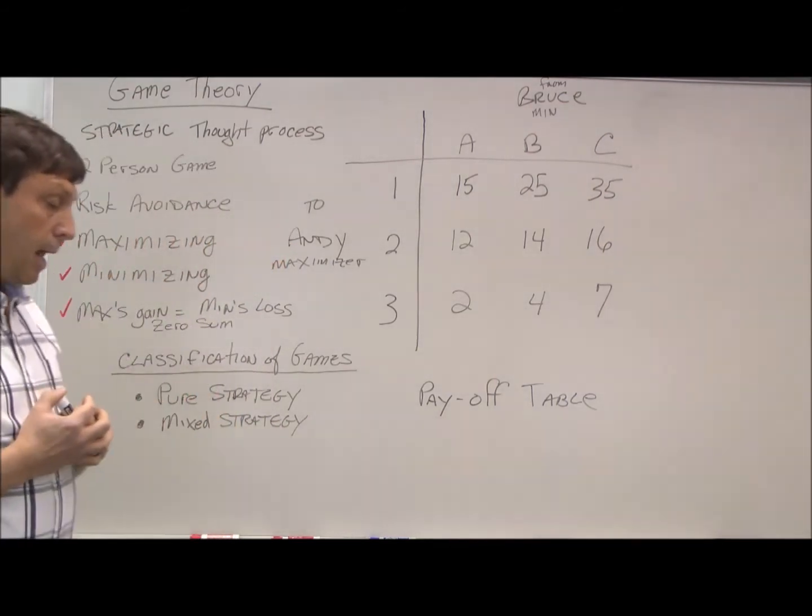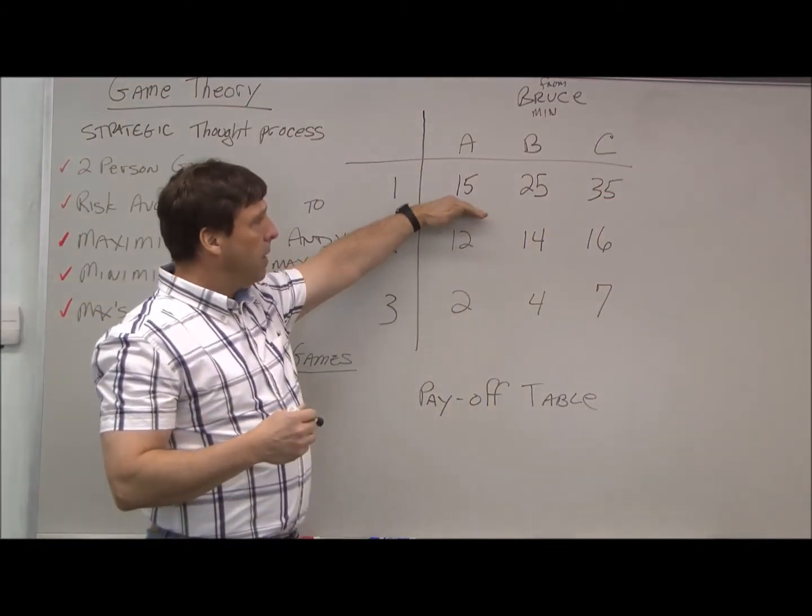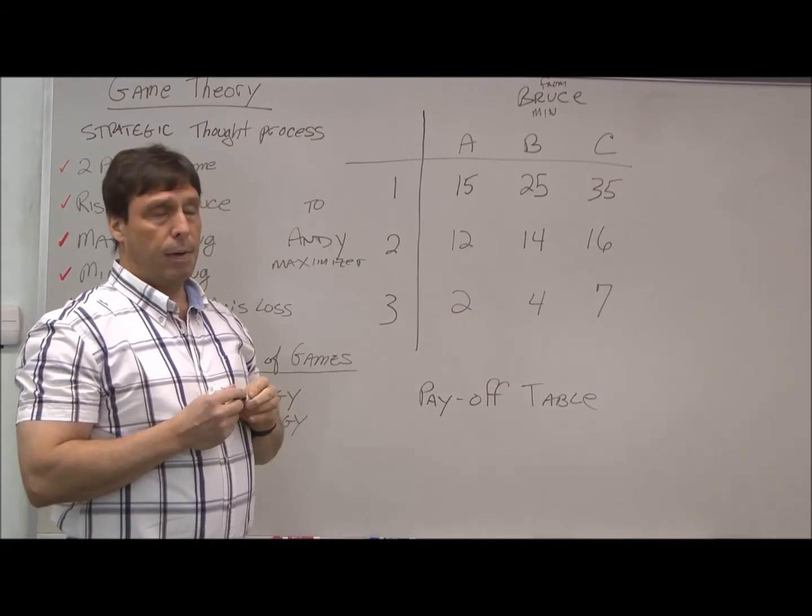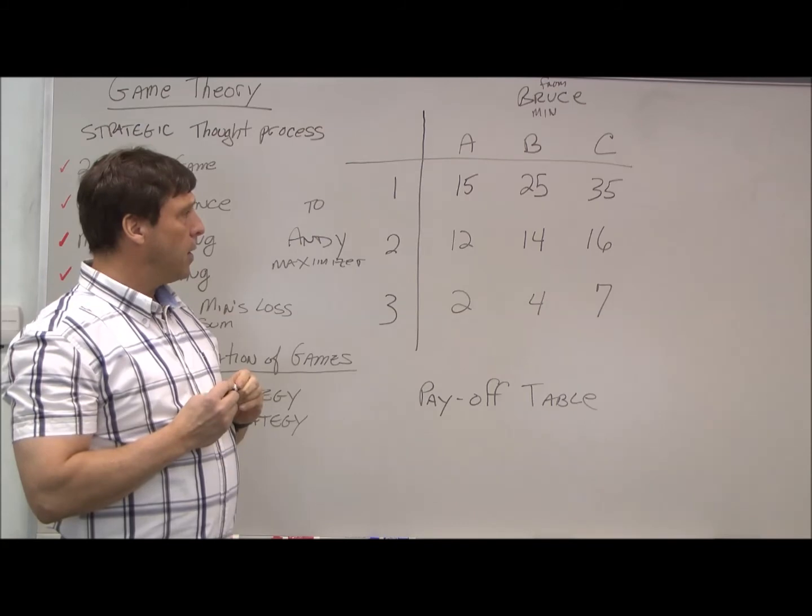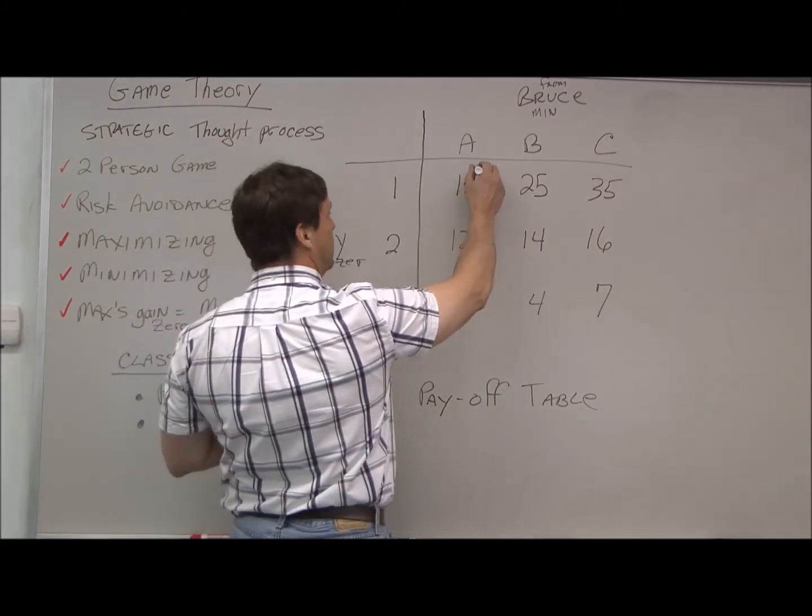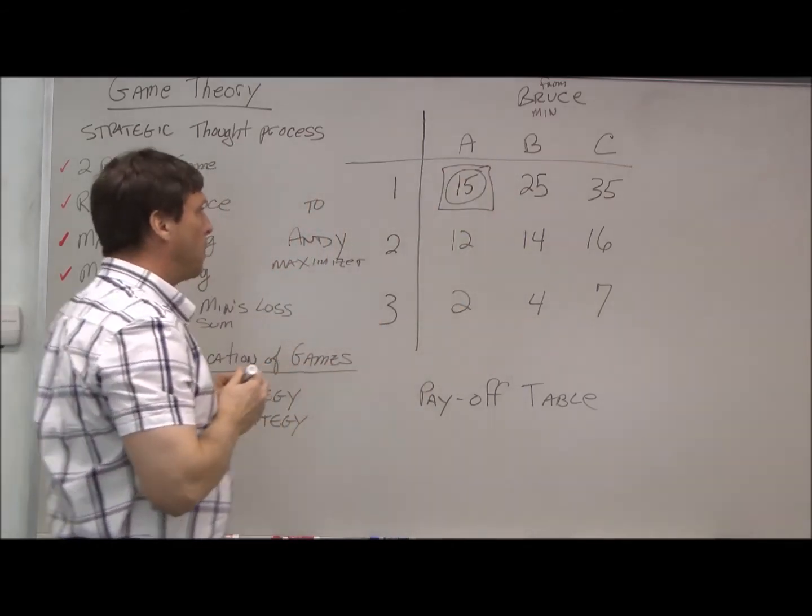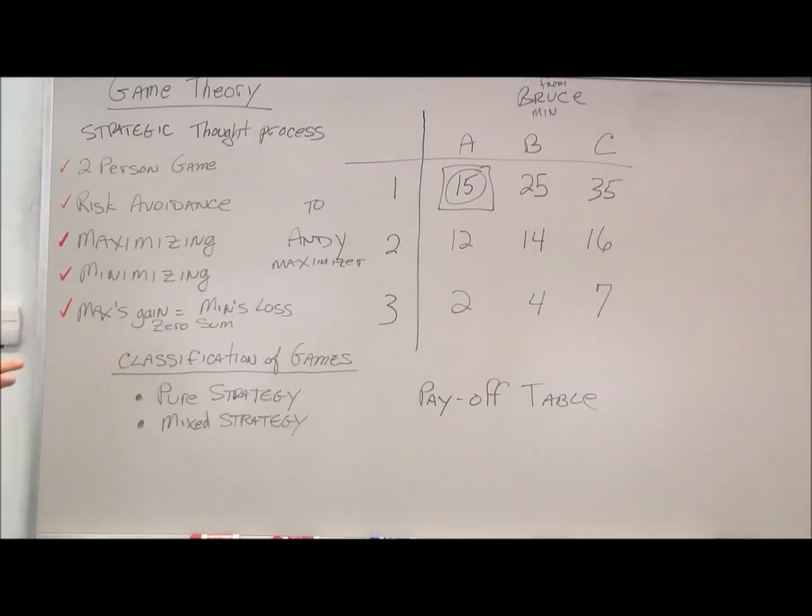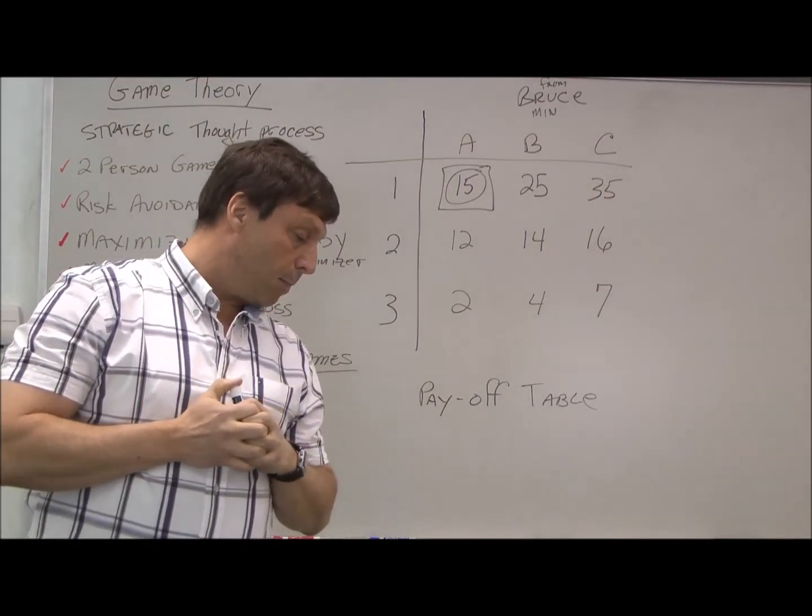In this game, we can see that if Andy's trying to maximize, he would always gravitate towards strategy one. Bruce, if he's minimizing, would always try and go to strategy A. And we'll go over this more in the next example. But this is an example of a pure strategy because both players would always choose either A or one. So they'd always gravitate towards A1. That makes this one a pure strategy.